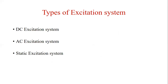There are three types of excitation systems: first is the DC excitation system, second is the AC excitation system, and third is the static excitation system. Excitation systems have taken many forms over the years of their evolution and are classified into these three categories. In this discussion we will first discuss the DC excitation system, then proceed to the AC excitation system and then the static excitation system.